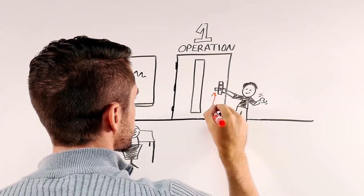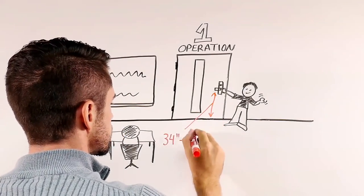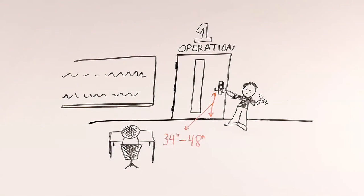Operable hardware mounted between 34 inches and 48 inches above the floor, and no tight grasping, tight pinching, or twisting of the wrist to operate, with the bottom 10 inches on the push side of the manual doors a flush smooth surface.